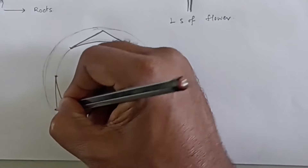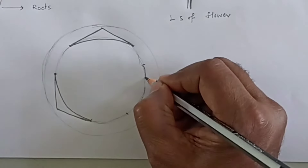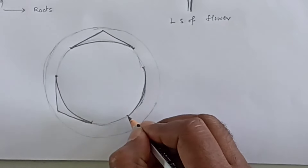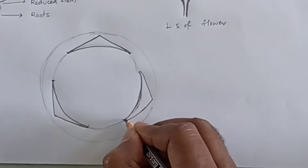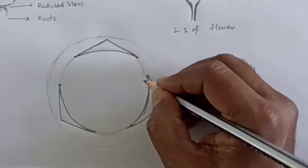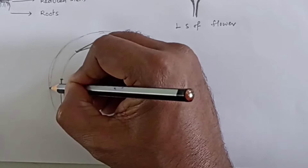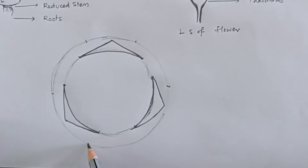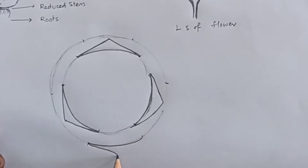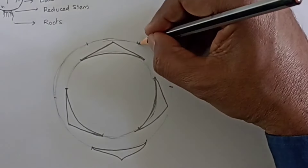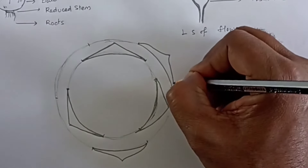This is the perianth. The inner whorl has 3 members. Byte mode — alternate arrangement. Androecium also has 3, alternate. We are using the same distance for these members — separate and evenly spaced.